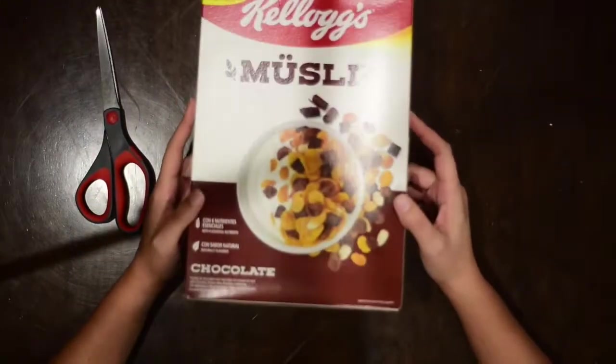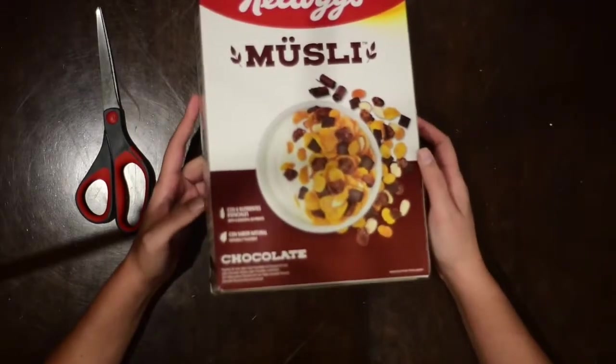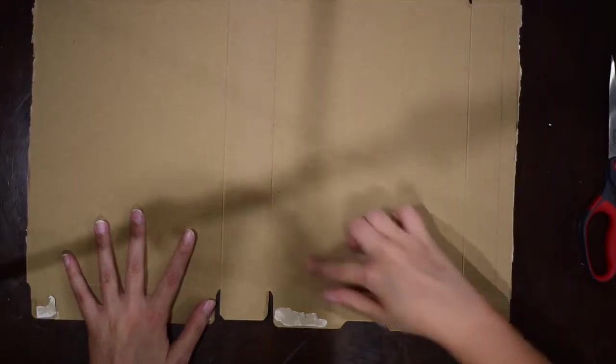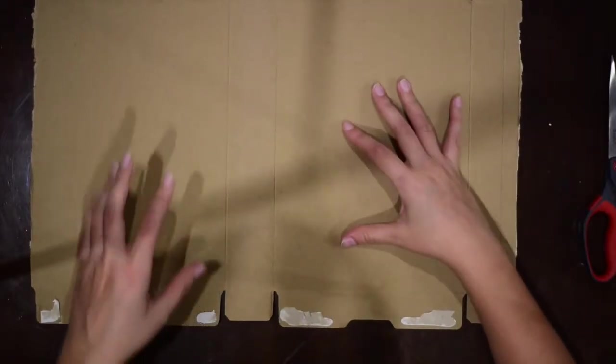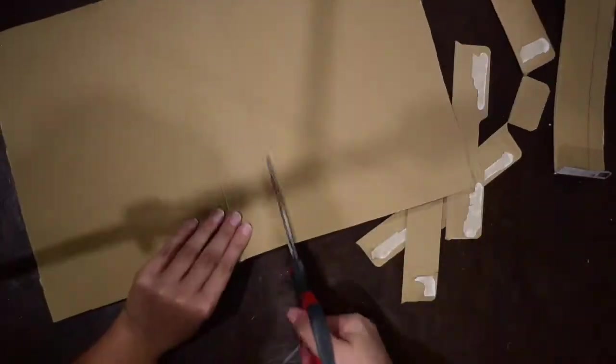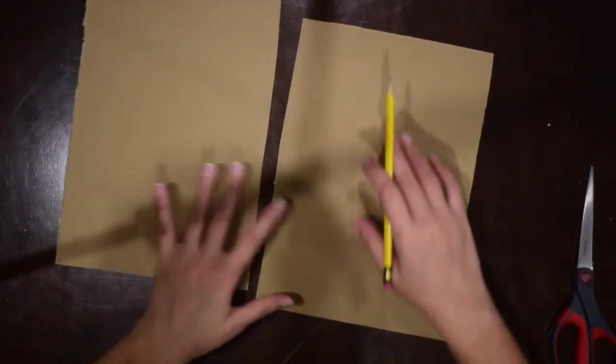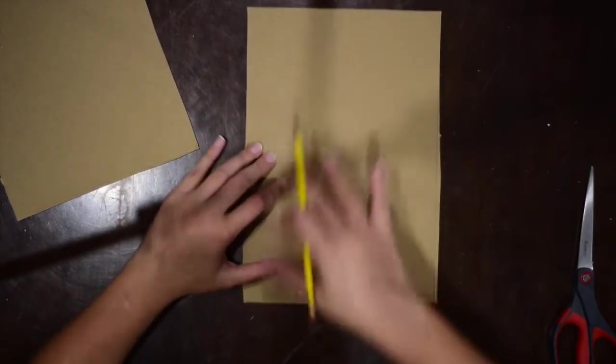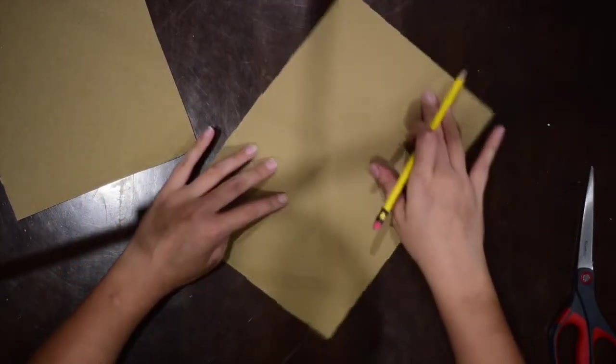So first, we have to open this box and cut it. Okay, so one of the big rectangles is going to be the house, and the other is going to be the roof. So, I'm going to do my house horizontal, but if you guys want to do it vertical, that's okay too, you guys can do it however you want.